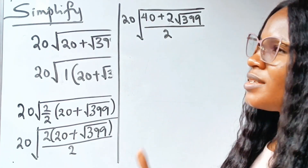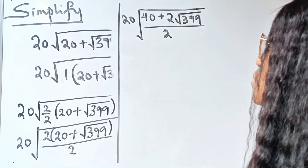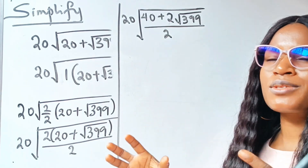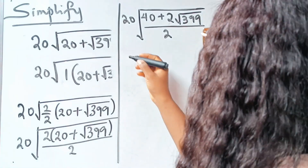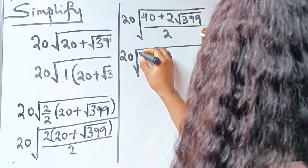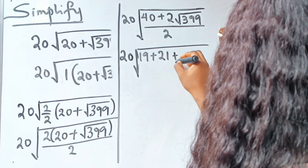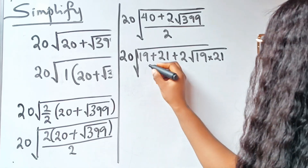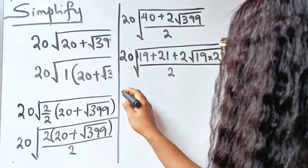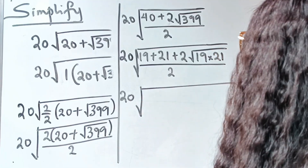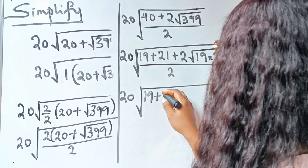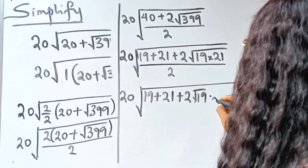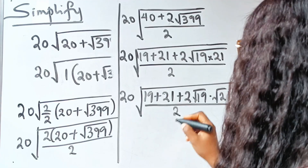Note that 40 is the same thing as 19 plus 21, and 399 is also the same thing as 19 times 21. You can see how we are trying to bring in the (A plus B) squared identity. So we have 20 times square root of (19 plus 21 plus 2 times root 19 multiplied by root 21), everything divided by 2.